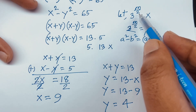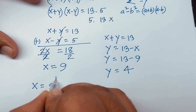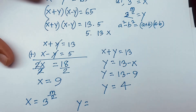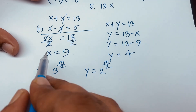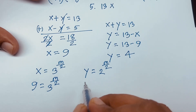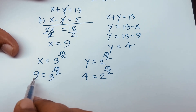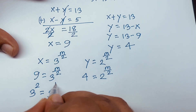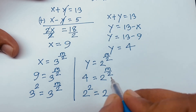Remember that X = 3^(m/2) and Y = 2^(m/2). So 3^(m/2) = 9 = 3², and 2^(m/2) = 4 = 2². Since the bases are the same, the exponents must be equal, giving m/2 = 2.